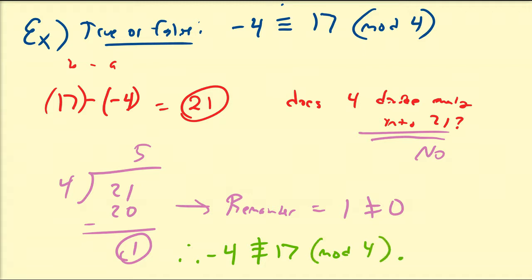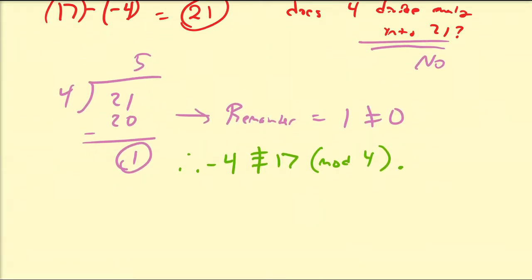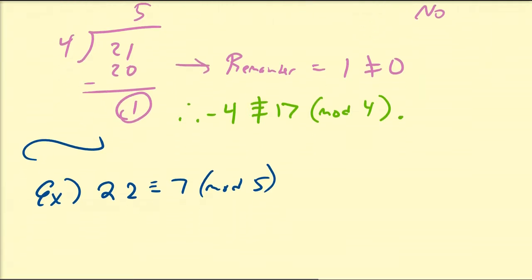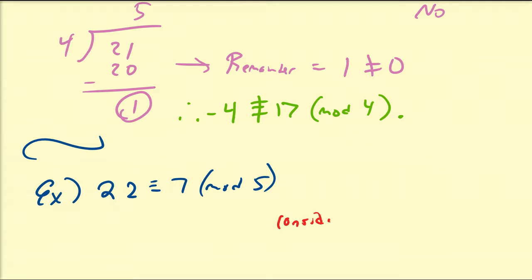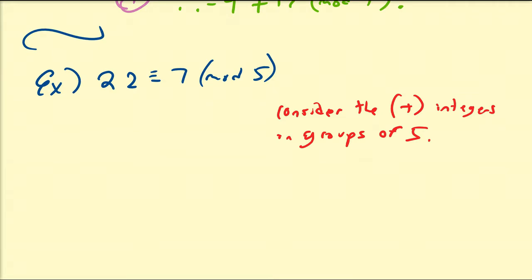So let's look at another example and see if we can generate a set of numbers which are congruent to one another. Let's look at the first one, 22 is congruent to 7 modulo 5. So consider the positive integers in groups of 5. I'm going to start with 0, 1, 2, 3, and 4. Notice that that is a grouping of 5.